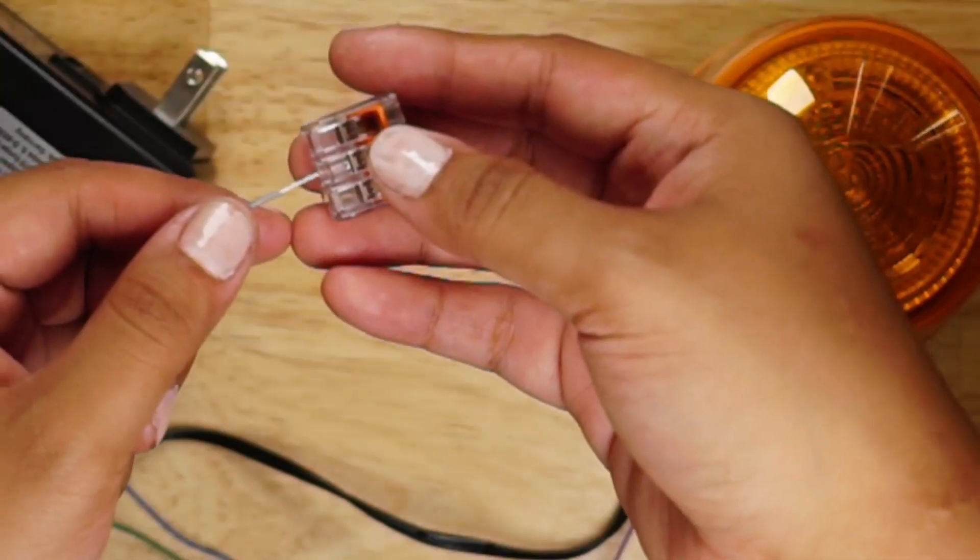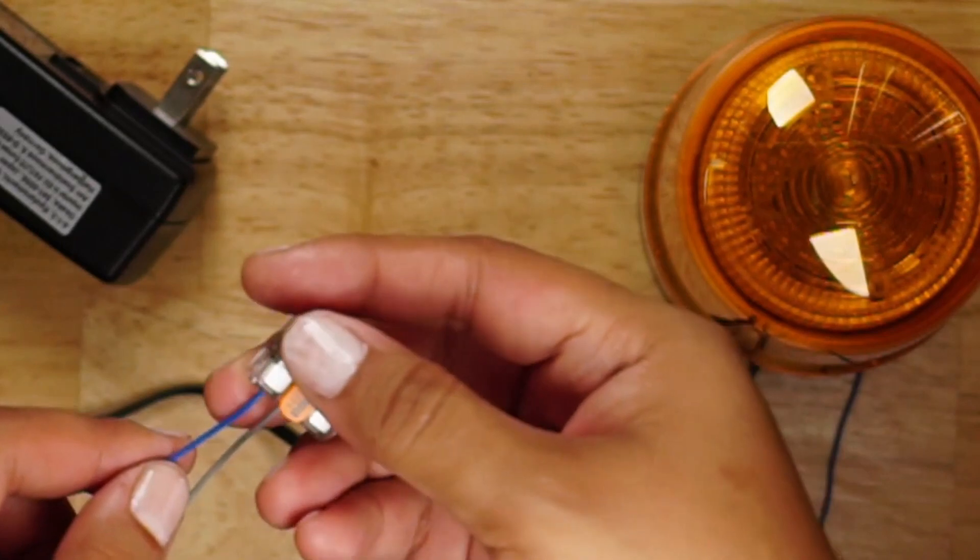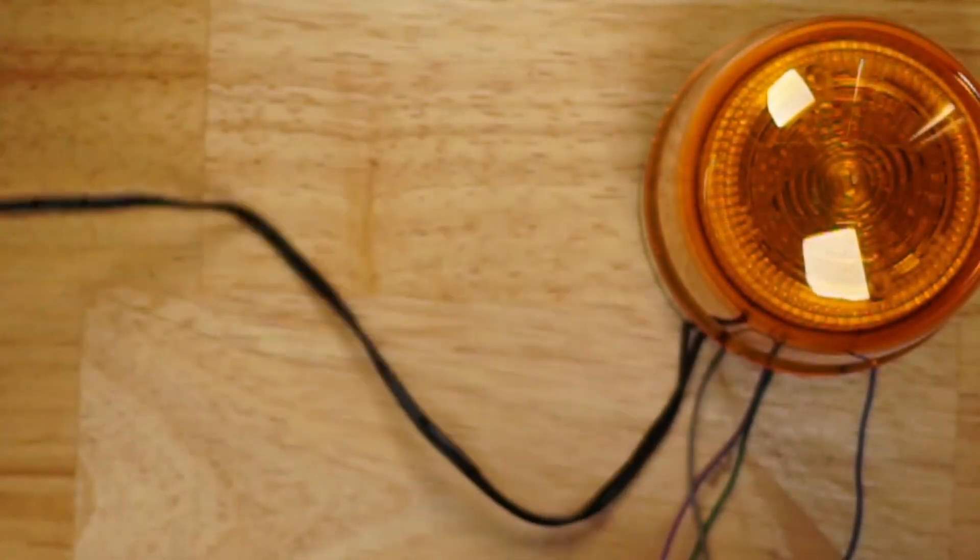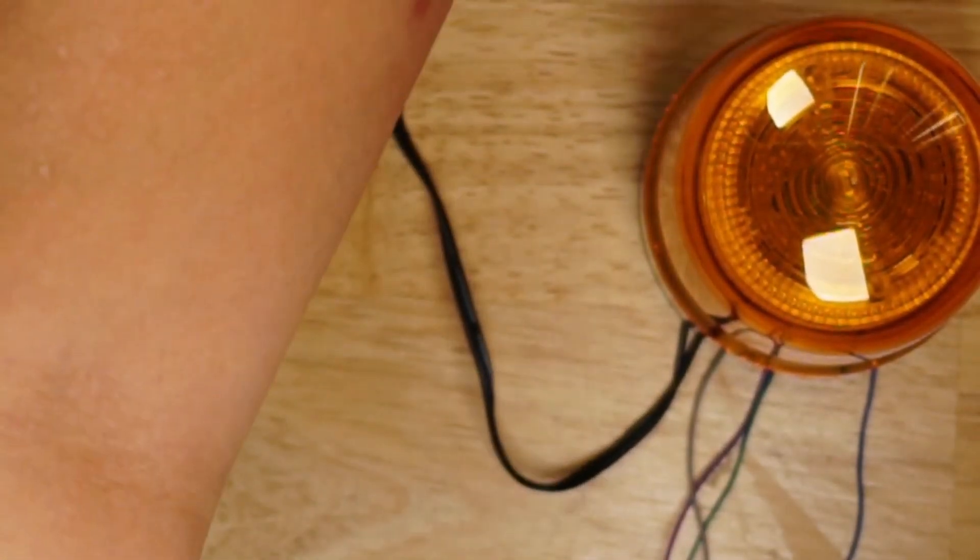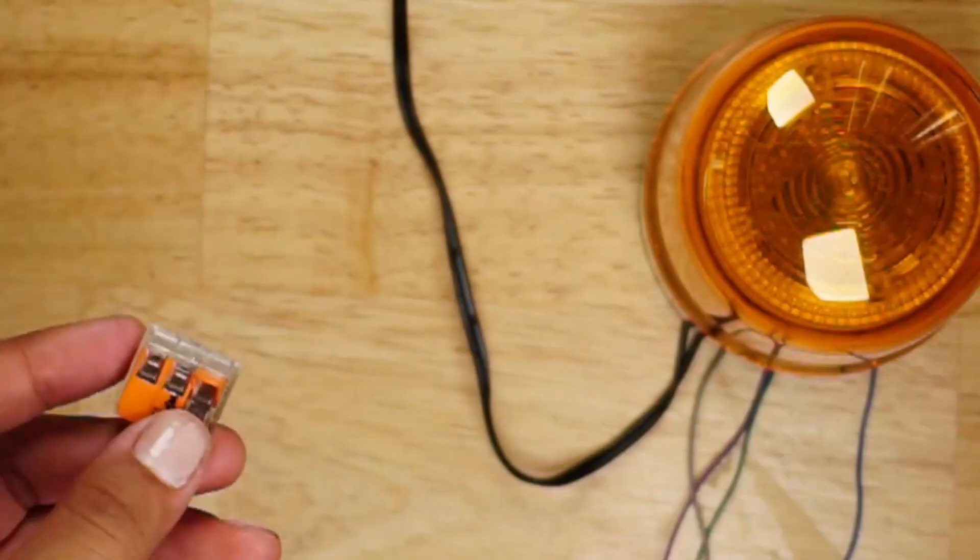With the gray common and blue channel 2 connected together, plug in the power supply. Channel 2 is blinking at 180 flashes per minute.